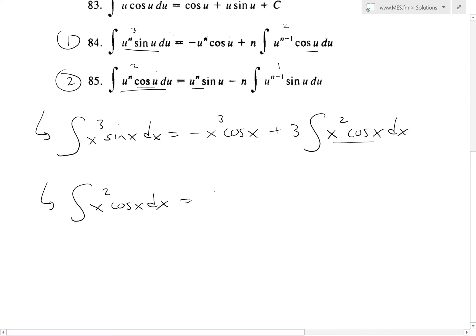I'll write this one: integral x² cos(x) dx. Now this equals, we apply this formula, we get u to the power of x² times sin(x) minus 2—n is basically 2 now, before it was 3—and then integral of x (now that's n-1, 2-1 is just 1) times sin(x) dx.